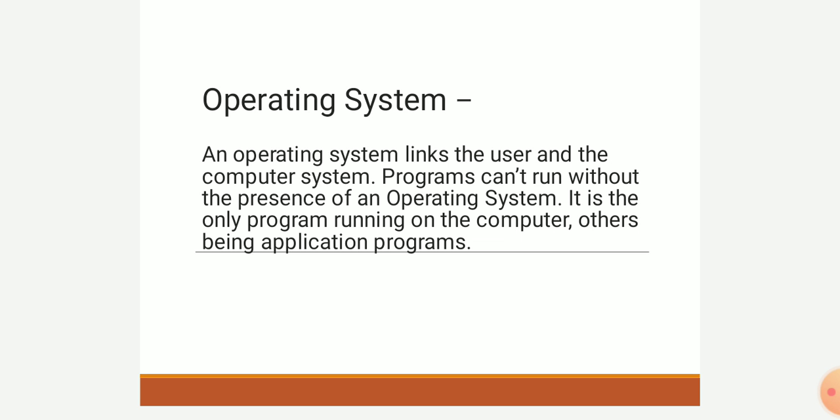It is the only program running on a computer other than application programs. There are two types of software: system software and application software. The operating system is a system software — it provides an interface and coordination between all the things going on in the computer.